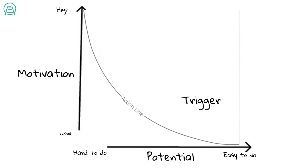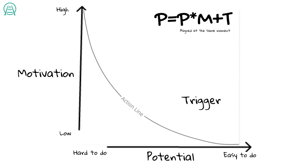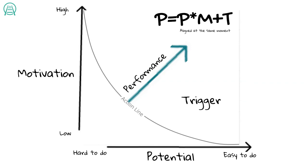In summary, this model applies to all types of human behavior. When motivation, potential, and a trigger come together at the same moment, that's when performance will occur. If any of the three elements is missing, that performance will not happen.